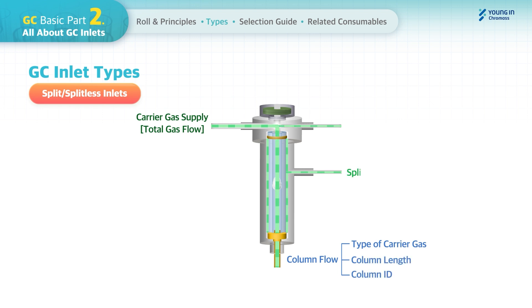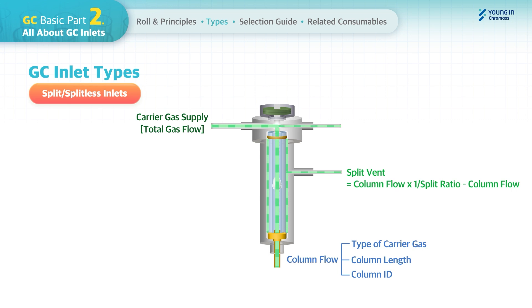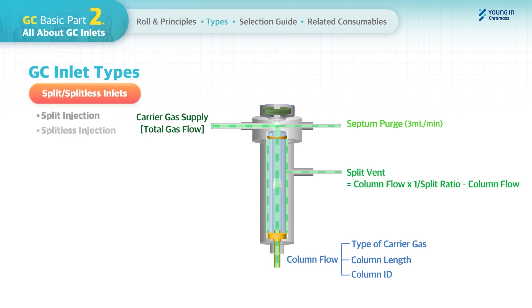The column flow is determined by the type of carrier gas, column length, and column ID. Split vent flow is calculated from the column flow and split ratio, which varies depending on sample concentration and column ID. The septum purge sweeps away septum scraps to remove potential contaminants and is usually set at 3 mL/min.